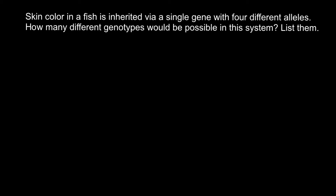Hello and welcome to Nikolai's genetics lessons. Today's problem is: skin color in fish is inherited via a single gene with four different alleles. How many different genotypes would be possible in this system? List them. As usual, I recommend you pause the video here, try to solve this problem on your own first, and when you're ready you can run the video again and compare your answer with my answer and explanation.